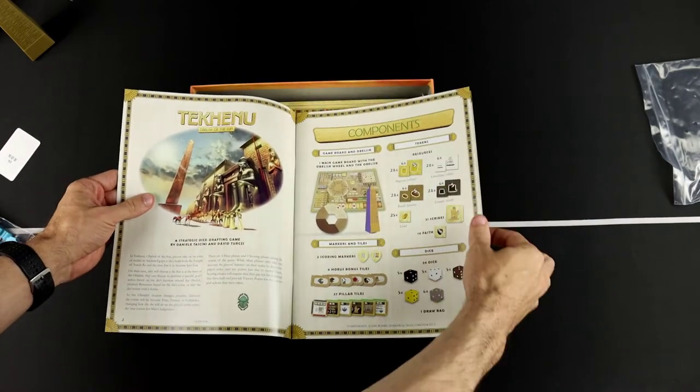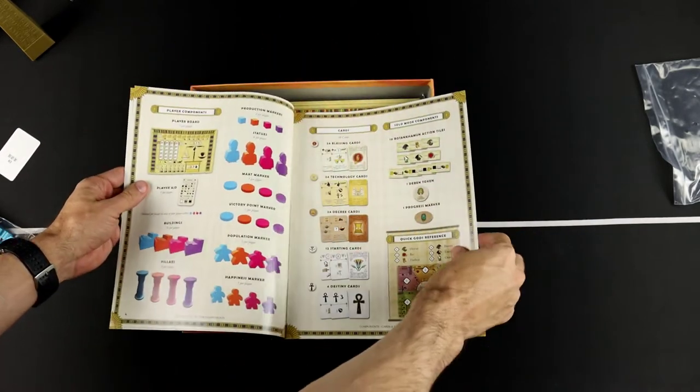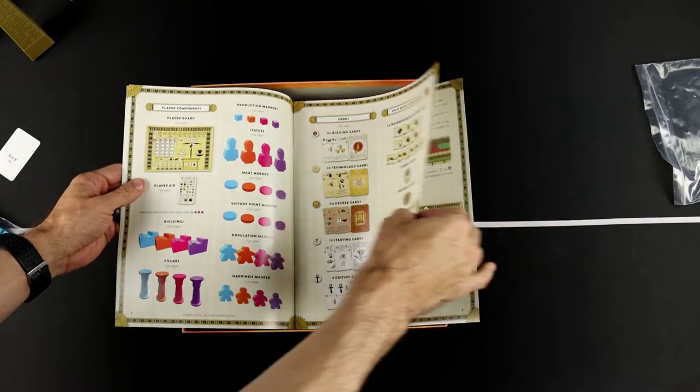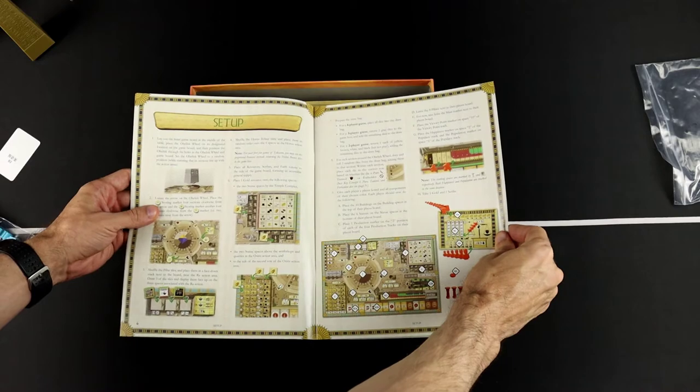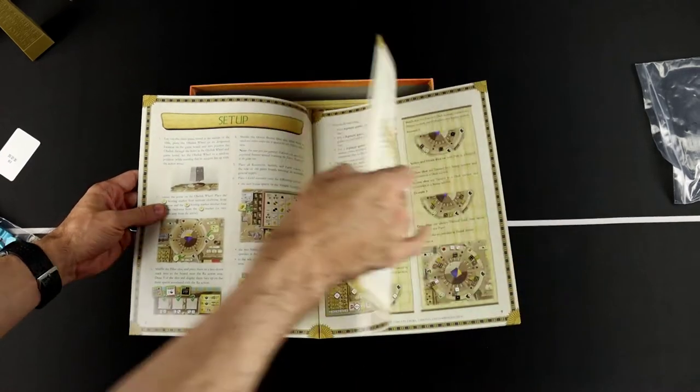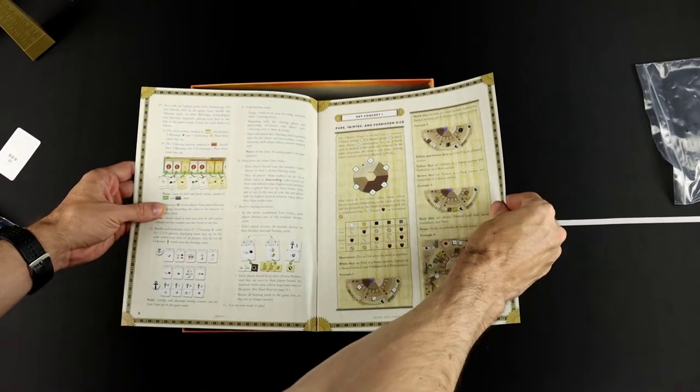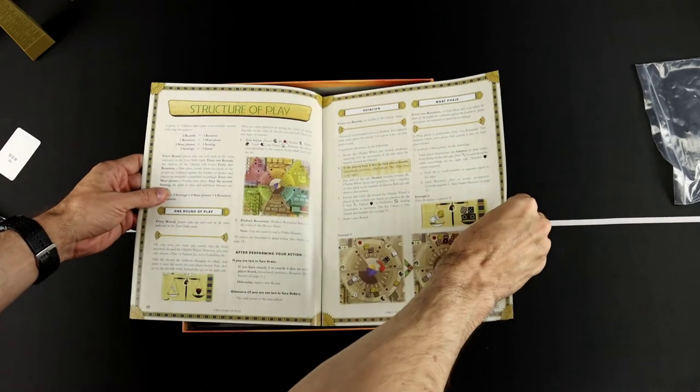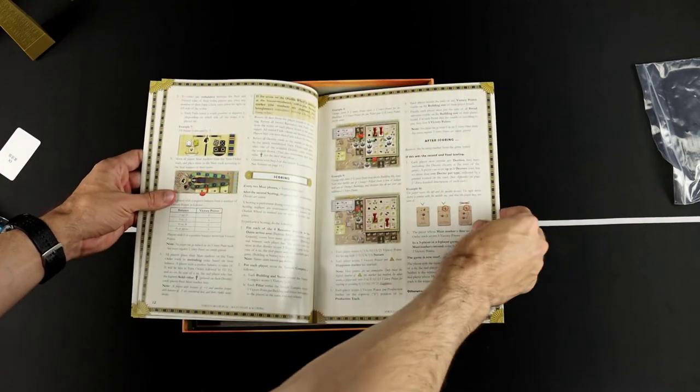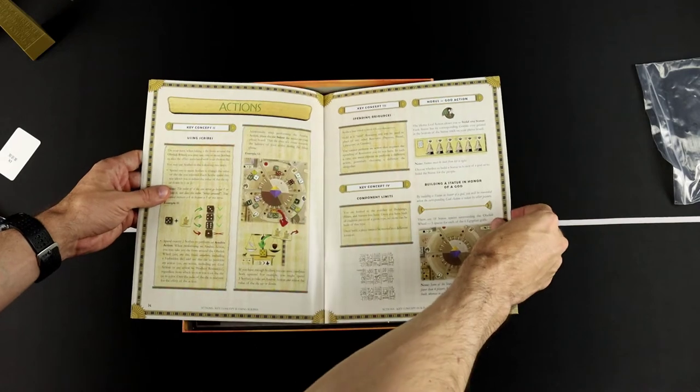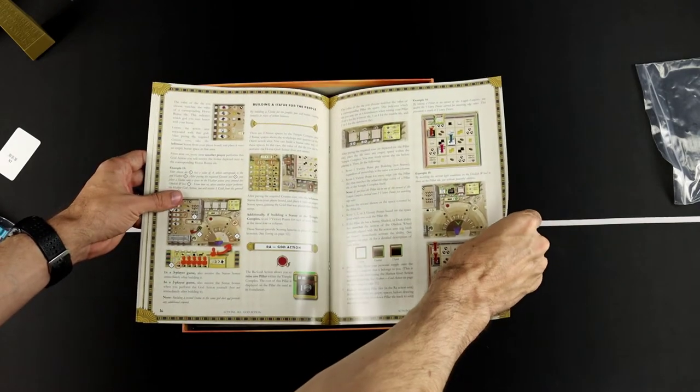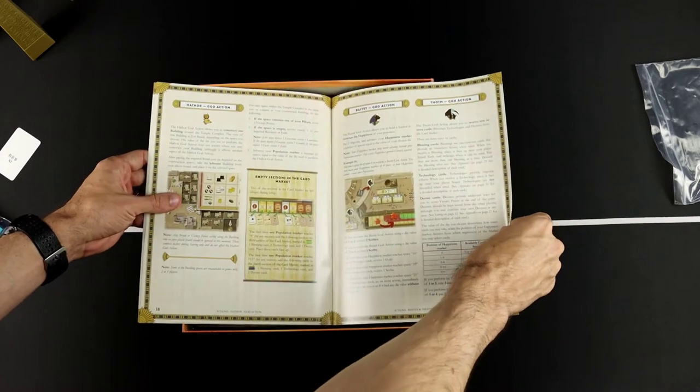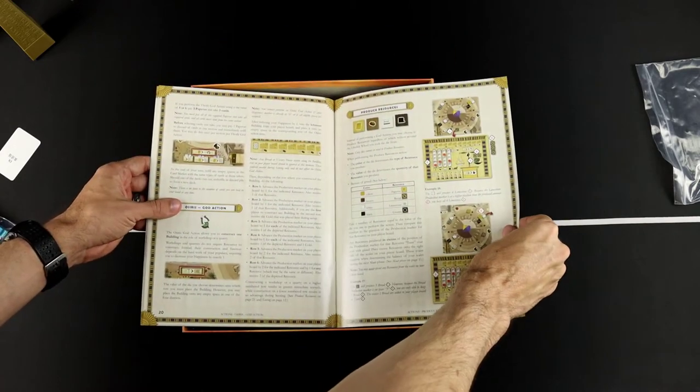All right, so we've got a list of all the components. Still looking at components. Then we've got the setup. This looks like it's laid out pretty nicely. Okay, kind of working through. Then it tells you about how to play, moving through all the different actions that you take. A lot of rules here, but it looks like it's laid out well.